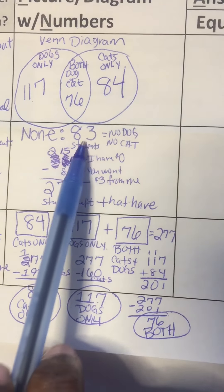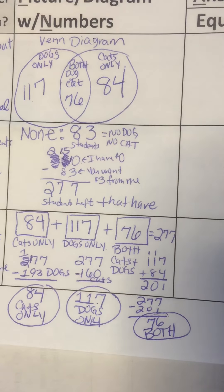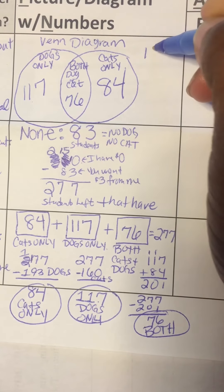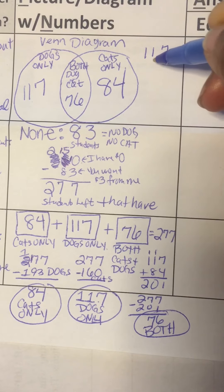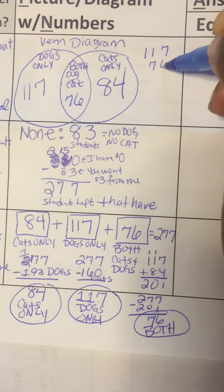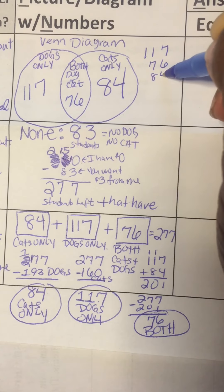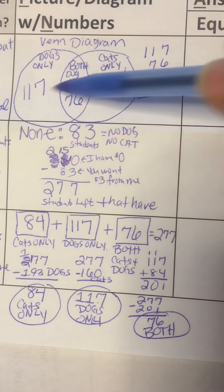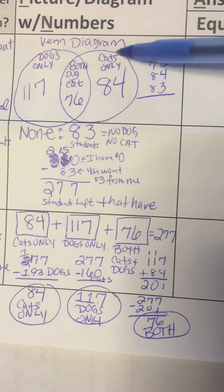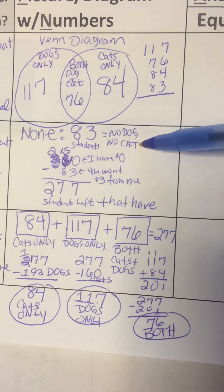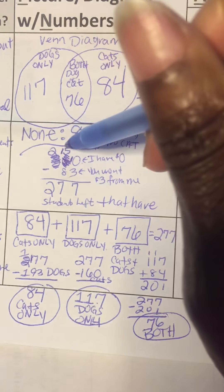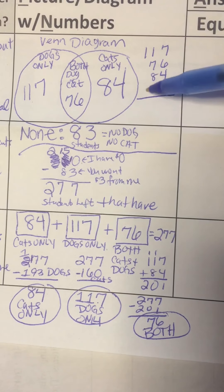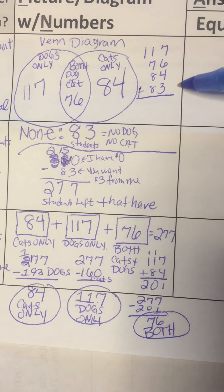When I add up all four of these numbers, it should come out to 360. So let's do that. 117, 76, 84, and 83. So dogs only, both cats and dogs, cats only, and then none. Let's see what that comes out to be. It should come out to be 360.